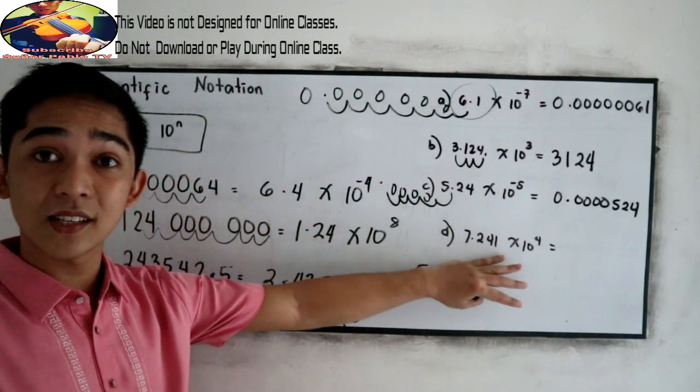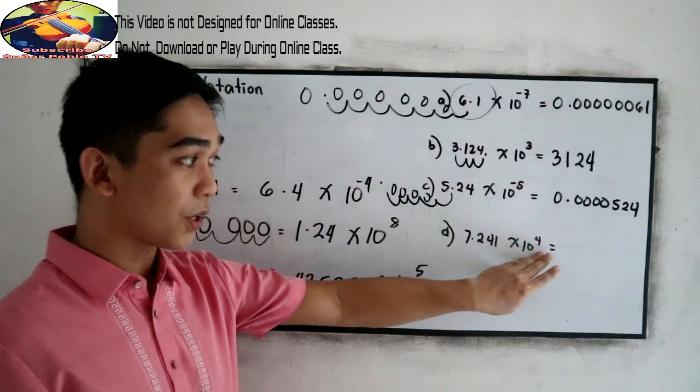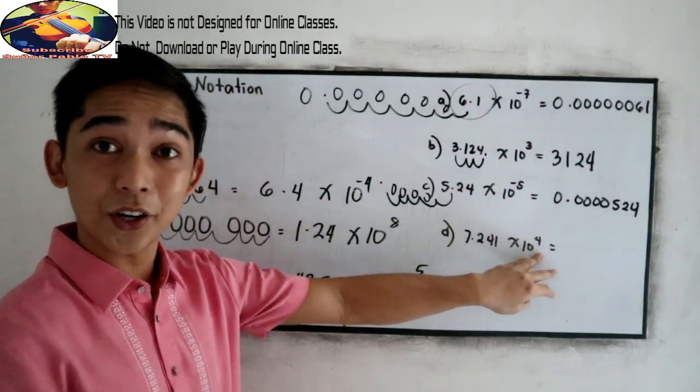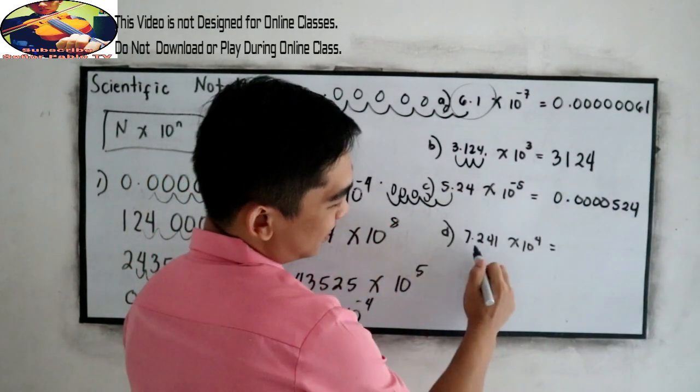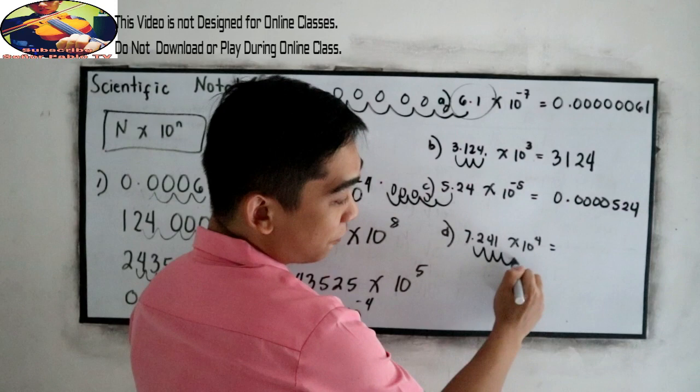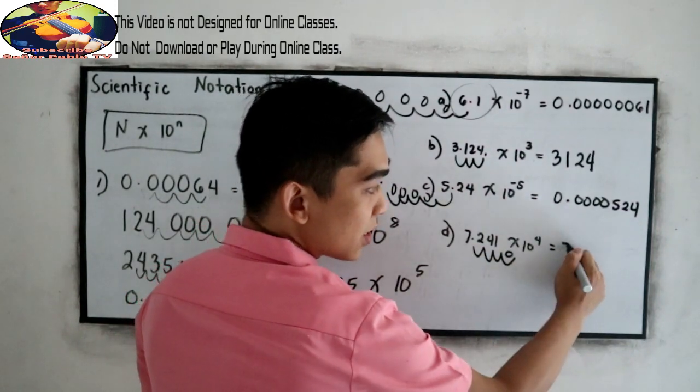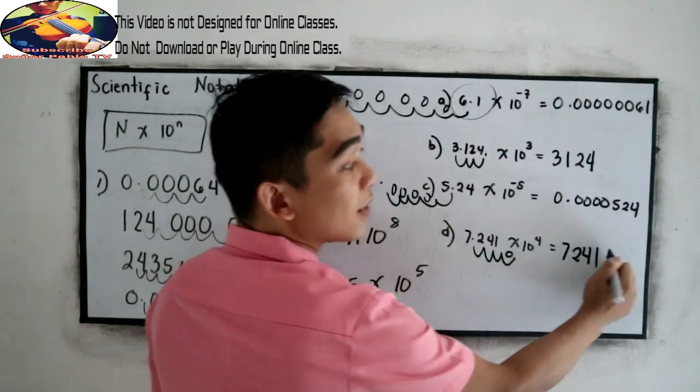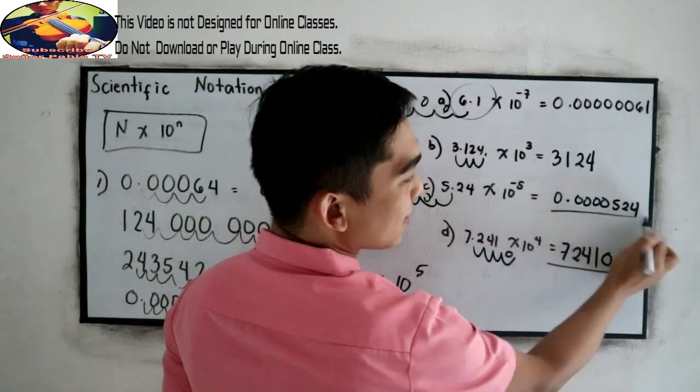And our last example. 7.241 times 10 raised to 4. So positive 4. We're going to move our decimal point to the right: 1, 2, 3, 4. So we're going to add 0 here. So 7, 2, 4, 1, then 0. This will be our answers.